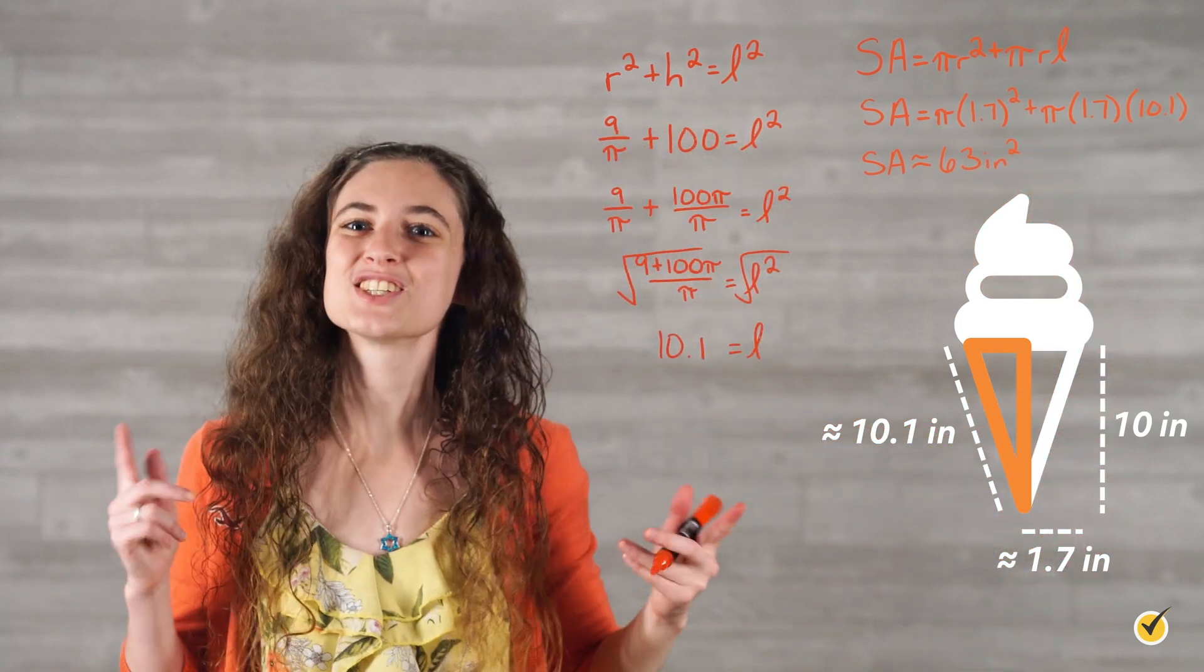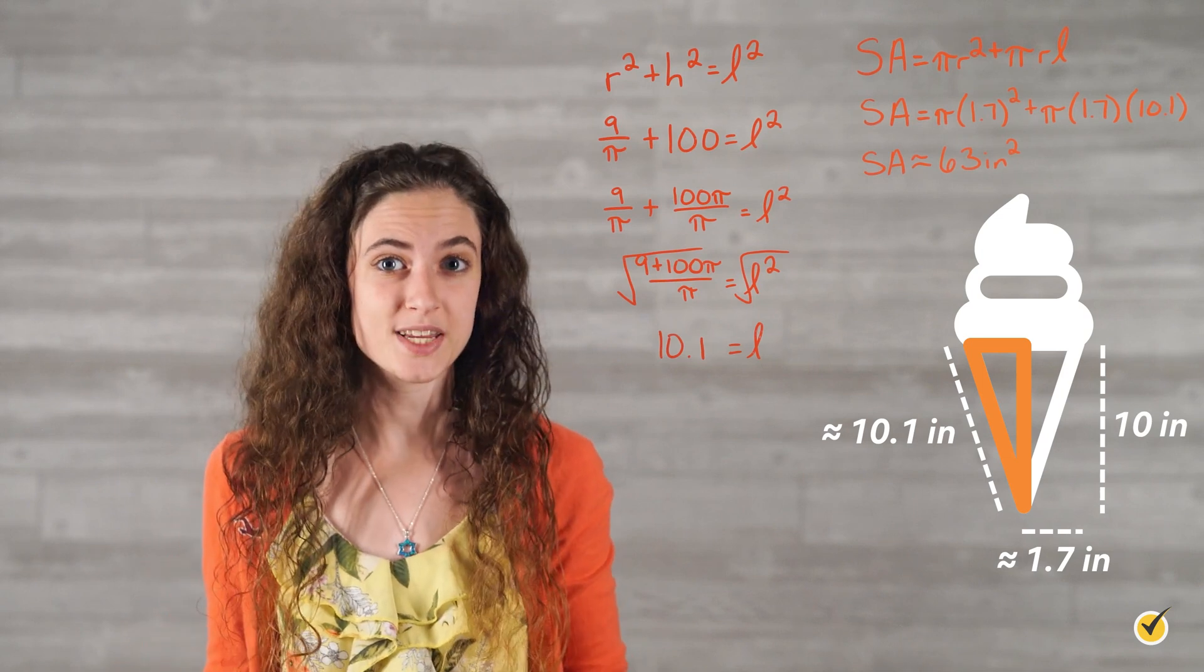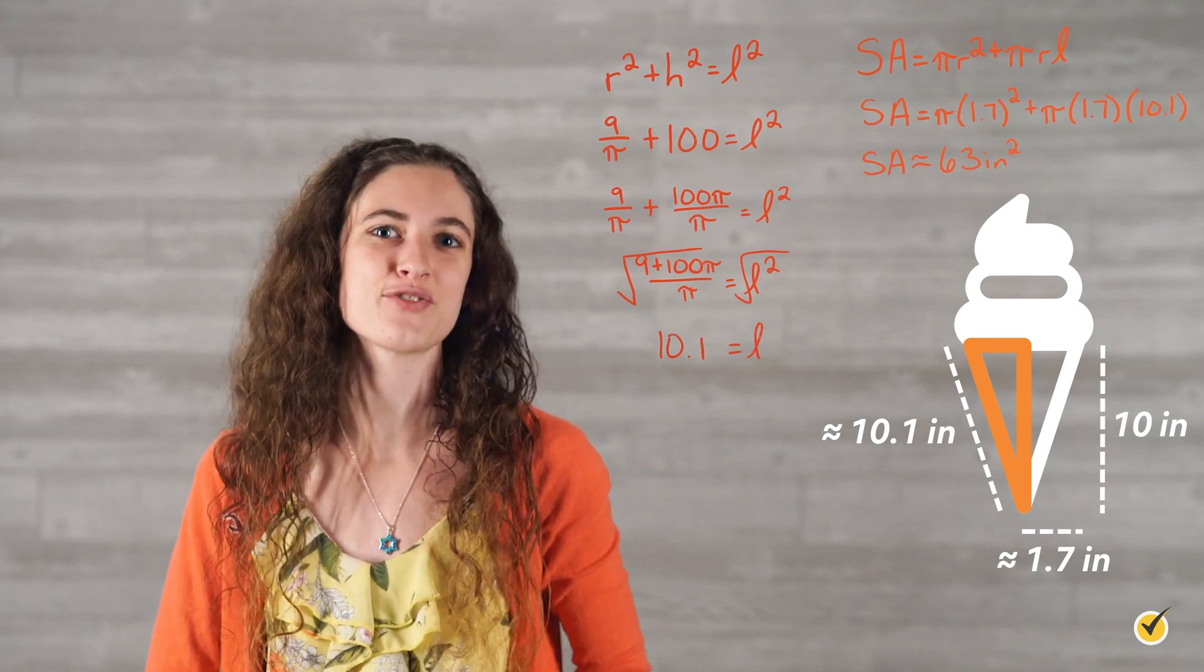And that's it! By just knowing the cone's volume and height, we were able to find its radius, its slant height, and its surface area.